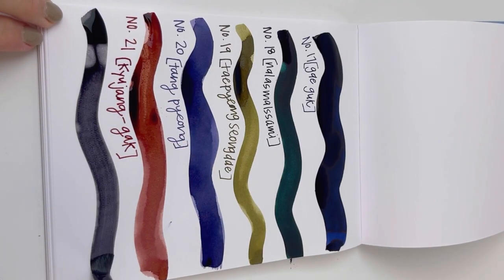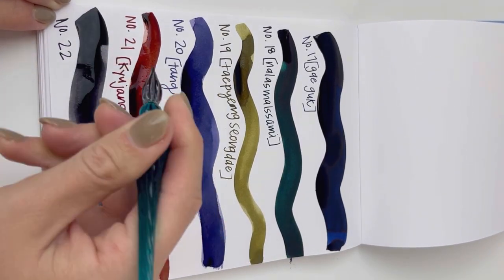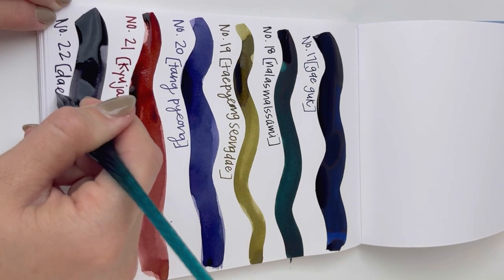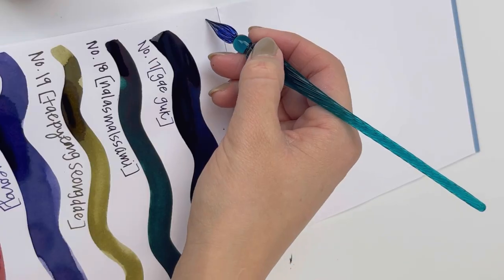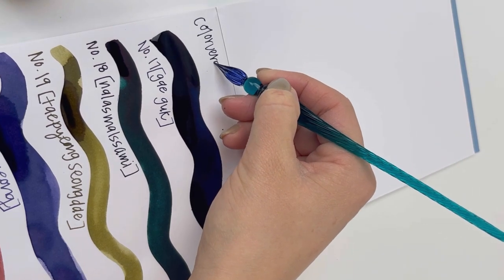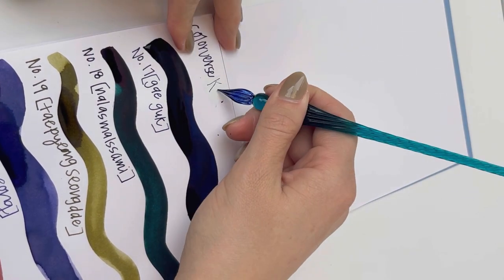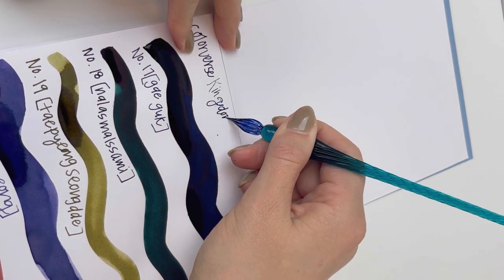And just so you have all the information, we did put these down just with a paintbrush and a J. Herbin spiral dip glass pen on Clairefontaine triumph paper. It's one of our classic choices of products to use when we're sampling inks.